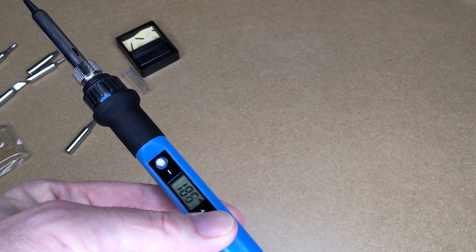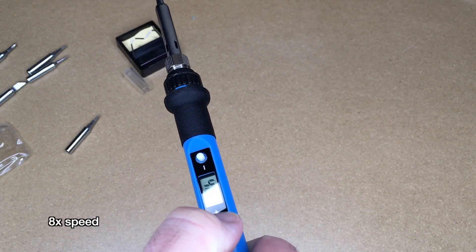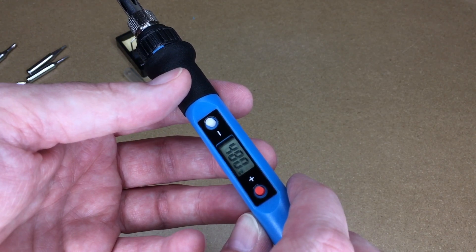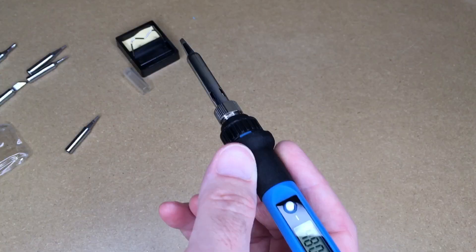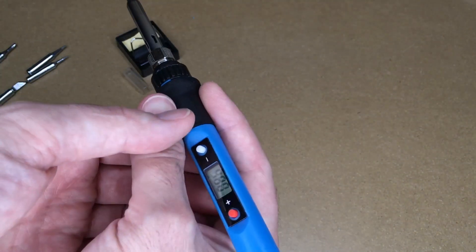Now hit plus and we'll go up as high as it'll go. So the high temperature is 480 degrees celsius. That would be 896 degrees fahrenheit. This takes 8 to 15 seconds to heat up to operating temperature and it does have memory on it.